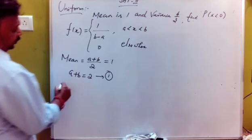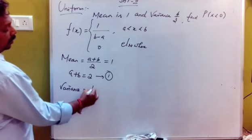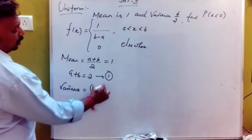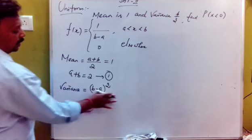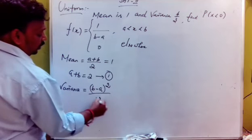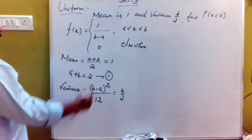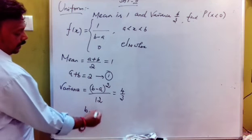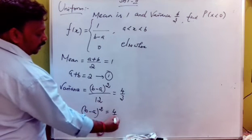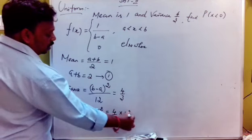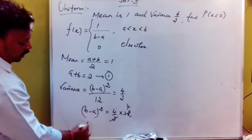Now for variance, the formula is (b minus a) whole square divided by 12. So, (b minus a)² = (4/3) × 12 = 16. Then b minus a = 4.